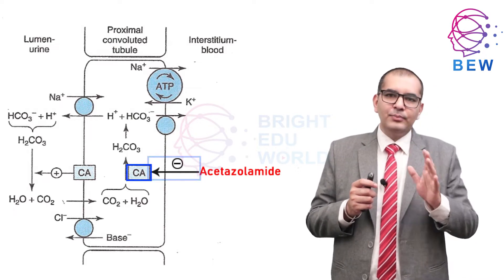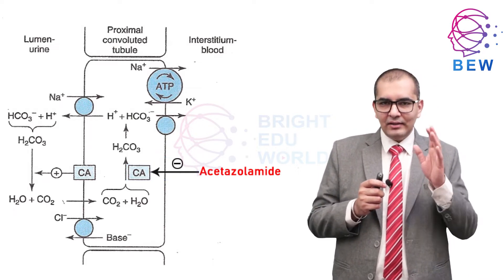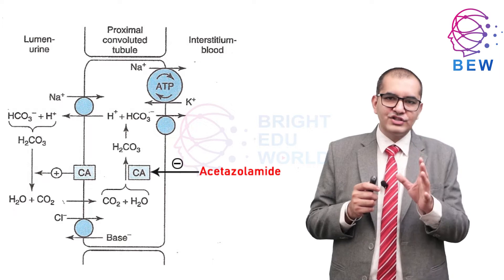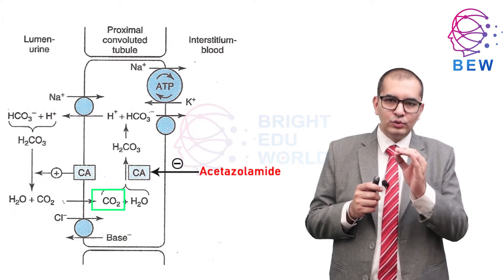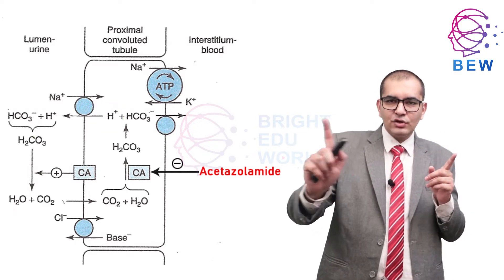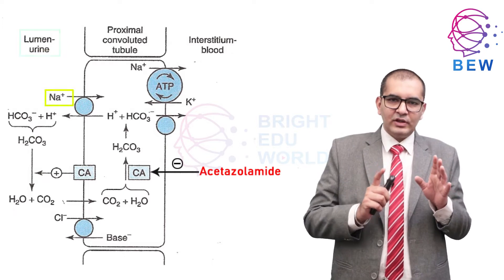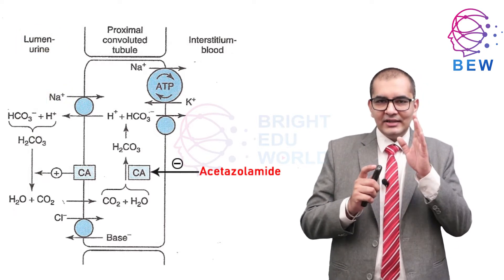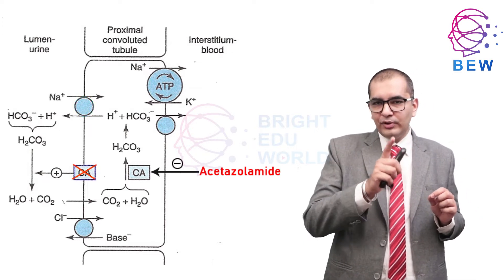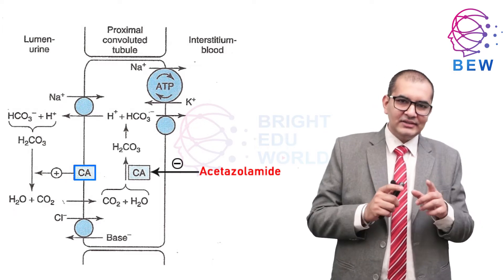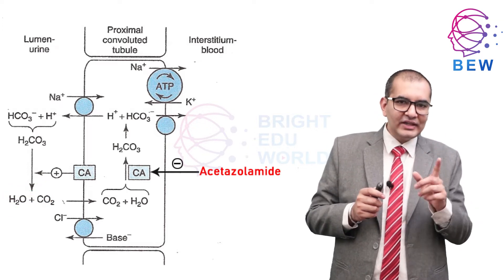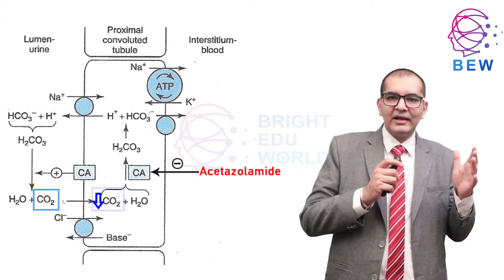Acetazolamide non-competitively but reversibly inhibits carbonic anhydrase in the proximal tubule cells, resulting in slowing of hydration of CO2, which leads to decreased availability of H+ to exchange with luminal Na+ through the Na+/H+ antiporter. Inhibition of brush border carbonic anhydrase retards dehydration of H2CO3 in the tubular fluid, so that less CO2 diffuses back into the cell.